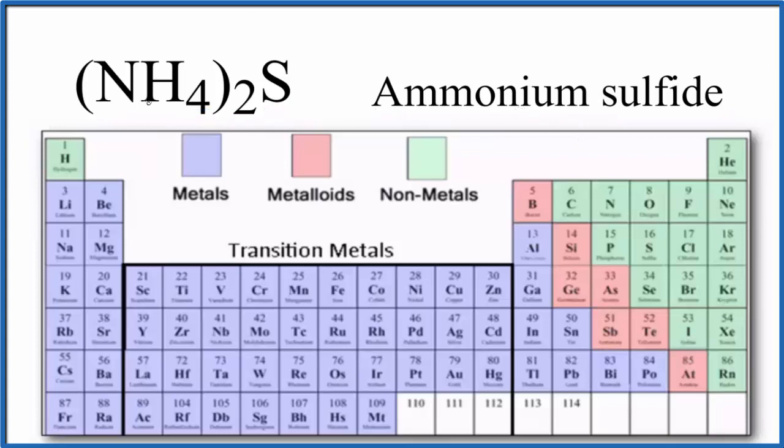If we looked at the elements in NH₄₂S, we'd have N, that's our nitrogen, H is hydrogen, and S is sulfur. And you can see they're all non-metals.